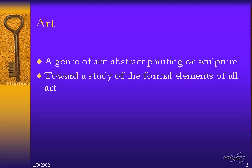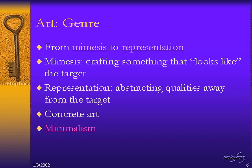There are two ways of looking at abstraction in art. The first deals with abstract painting or sculpture — essentially a genre of art. The second way abstraction is used within art is when we talk about the formal elements that make up all genres of art — any kind of art you might find in a museum or on the web.